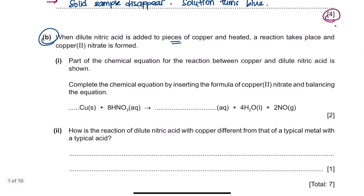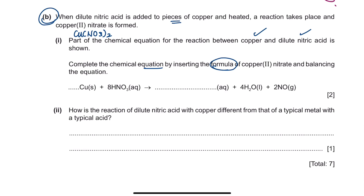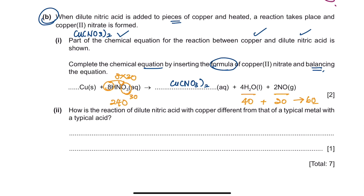Question B: when dilute nitric acid is added to pieces of copper and heated, a reaction takes place and copper nitrate is formed. Part of the chemical equation is shown — complete and balance it. Copper reacting with nitric acid gives copper nitrate. To balance, start with oxygen as it has the largest number: there are 24 oxygens on the right side (8 × 3). On the left, you have 4 + 2 = 6 oxygens, so you need 18 more, requiring a coefficient of 3 in front of water, giving you 18 oxygens and 3 copper on the left.